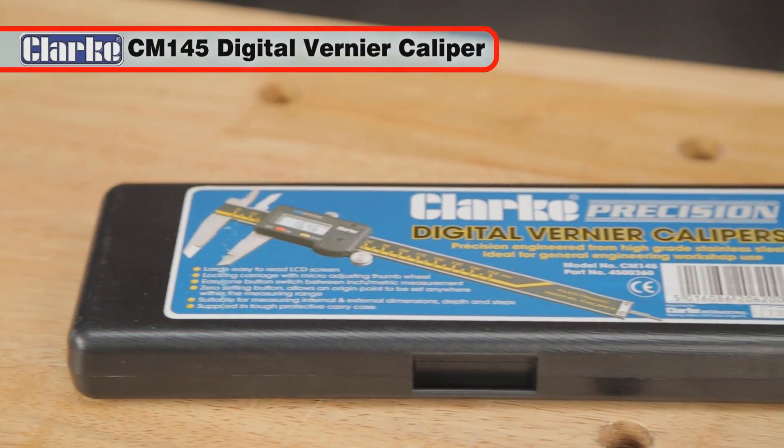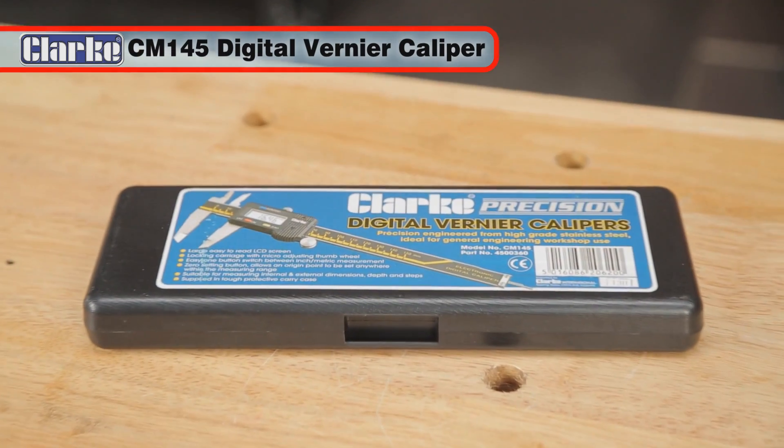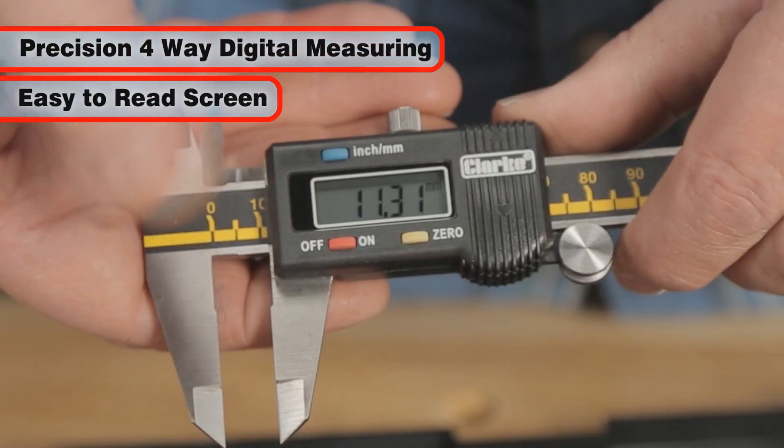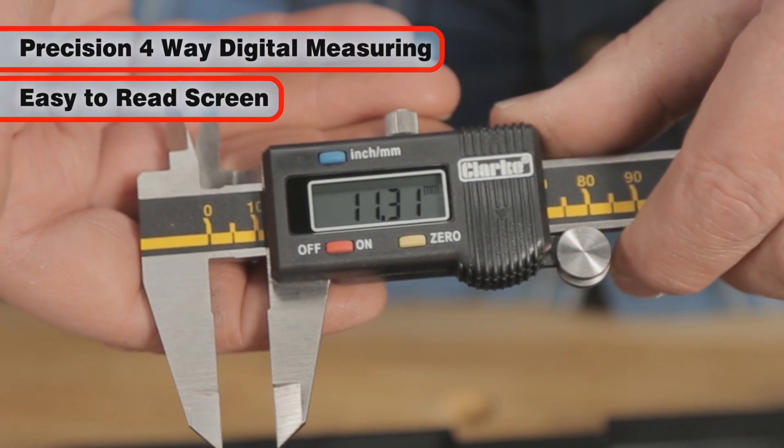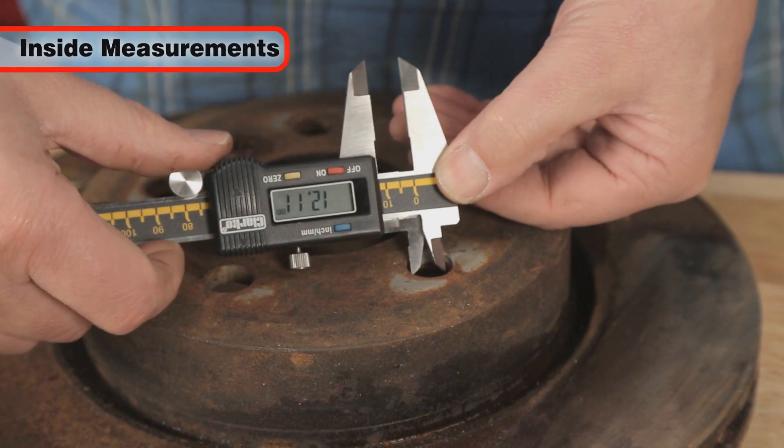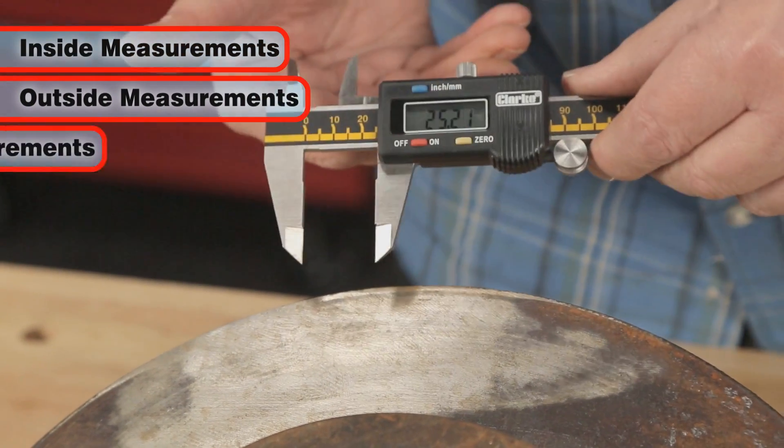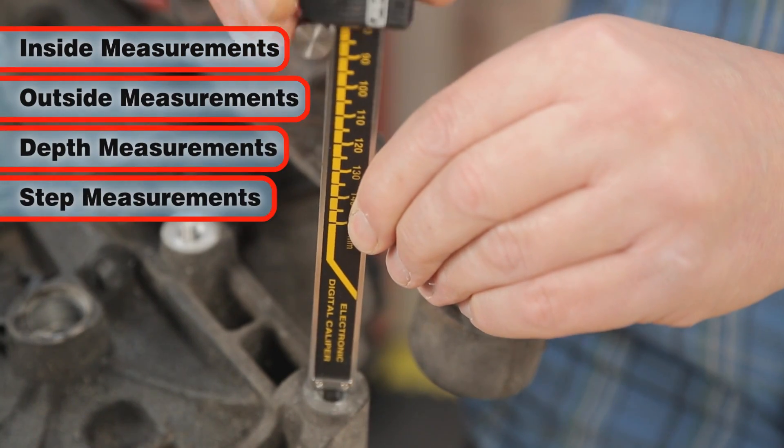The Clark CM145 Digital Vernier Caliper is a precision four-way digital measuring caliper with an easy-to-read LCD screen. It is excellent for taking inside measurements, outside measurements, depth measurements and step measurements.